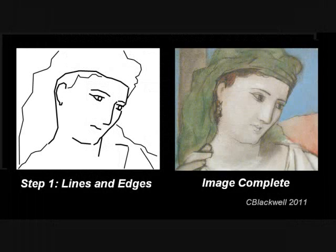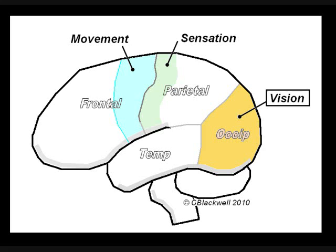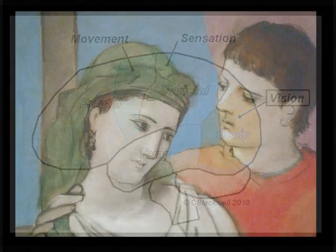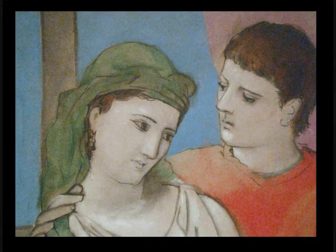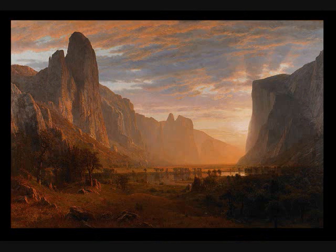The brain starts to process an image by detecting lines and edges. Further processing steps add movement, color, form, and depth perception. Movement, form, and depth perception are processed near the parietal lobe, while detail and color are processed near the temporal lobe. Eventually, the completed image reaches conscious recognition, somewhere in the brain that has yet to be identified. And that completes our tour from the eye to the brain, from external object to internal image. Of our five senses, vision allows us to appreciate the beauty of our world with a richness unequaled by any other sense.